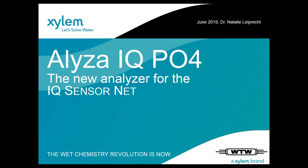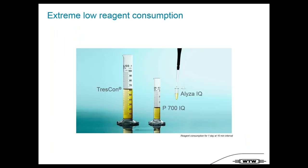That was a short overview of IcoSensorNet, sensors, and applications. One of the big topics for today is new technology. Since July we have the ELISA IQ PO4 available — a new analyzer for IQ SensorNet. We can say the wet chemistry revolution is now. The big point is reagent consumption. Comparing our old Trescon analyzer and the previous P700 IQ phosphate analyzer to ELISA, we are talking about less than one milliliter of reagent per day.